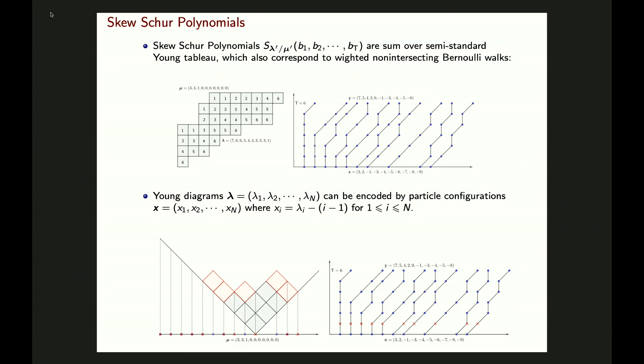There is a way to encode Young diagrams by particle configurations. You rotate the Young diagrams and project each row to the horizontal axis. For the black Young diagram, the first row projects to one point, the second row to another, and the relation is xᵢ = λᵢ − i − 1. For Young diagrams, λᵢ can equal λᵢ₊₁, but for particle configurations, xᵢ ≥ xᵢ₊₁ + 1. So looking at mu-transpose gives the initial configuration, and because numbers are strictly increasing along each column, the particles only jump by one at each step — they are Berlouli walks.